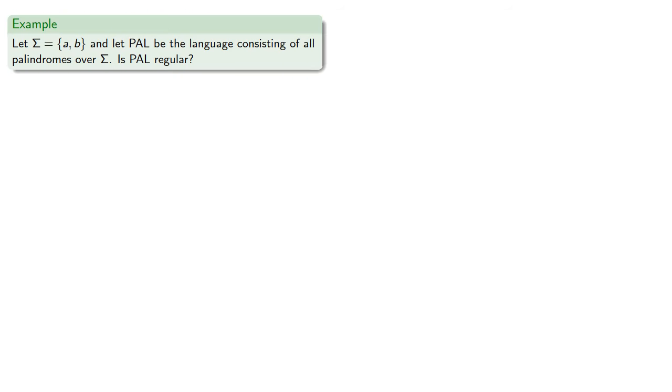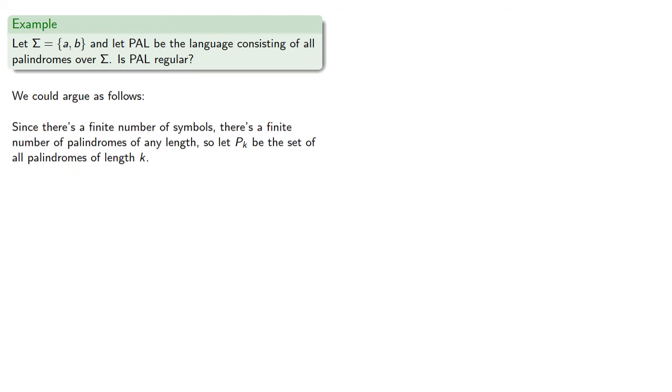And one important example where we run into this is in the language of palindromes. So we could argue that since there's a finite number of symbols, there's a finite number of palindromes of any length. So let pk be the set of all palindromes of length k.